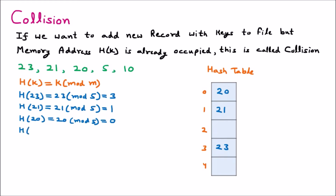For key 5, we compute 5 mod 5, and the remainder is 0. However, position 0 is already occupied by 20. This is called collision — whenever we want to add a new record but the memory address is already occupied, that is a collision. So key 5 should go to position 0, but position 0 is already taken.